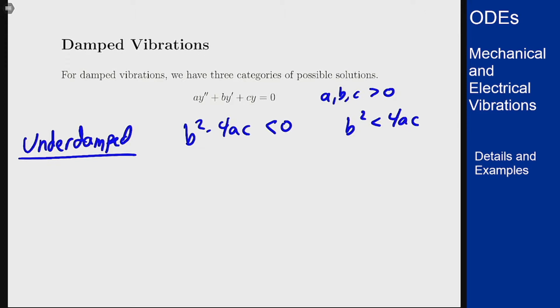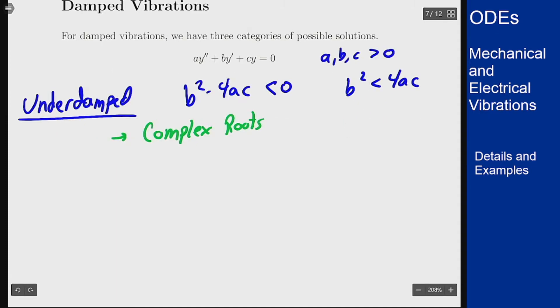So in this case we're going to get complex roots to solve this problem because the characteristic equation ar² + br + c has a negative discriminant.